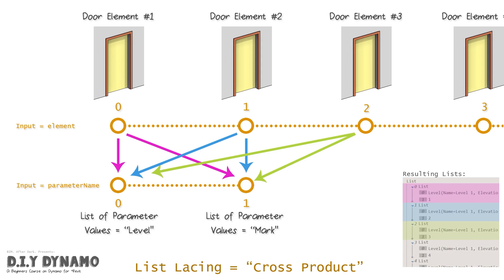And you could see what I'm showing here with the magenta, the blue and the green arrows is that we have a series of lists now, and each one of these lists represents each door element. So door element number one, you could see on the right hand side with our resulting lists, is actually going to be on level one, and it's going to be door mark number one. And you can see door element number two, which is blue, is going to be level one, and it's going to be door mark number two. And then door element number three is going to be level one and door mark number three. So you could see by using cross product, it's actually going to give us an individual set of lists and data, and it's actually going to look for each one of those parameters that we wanted.